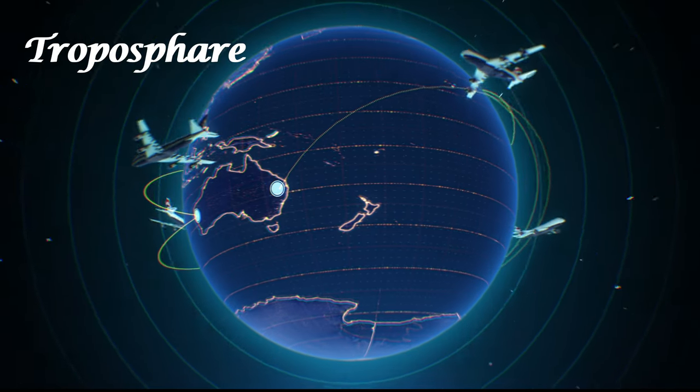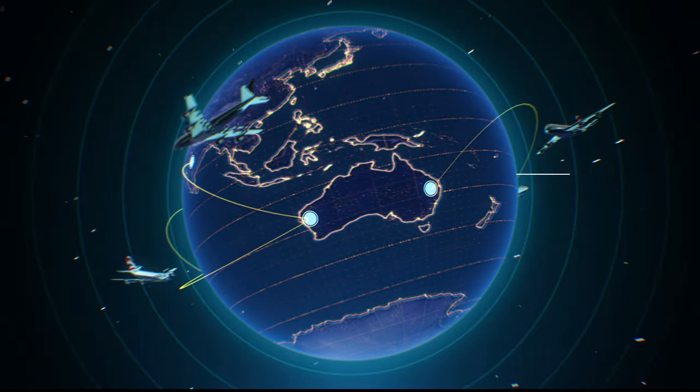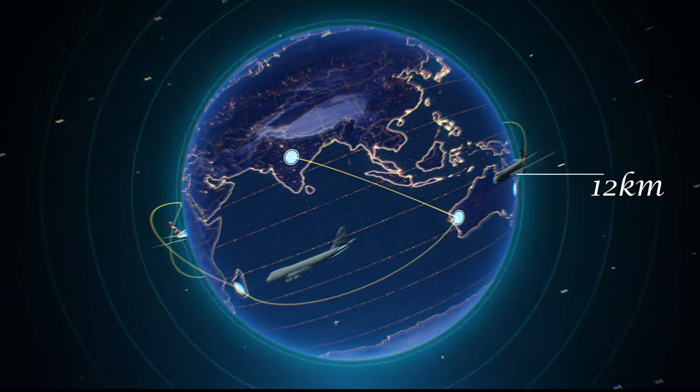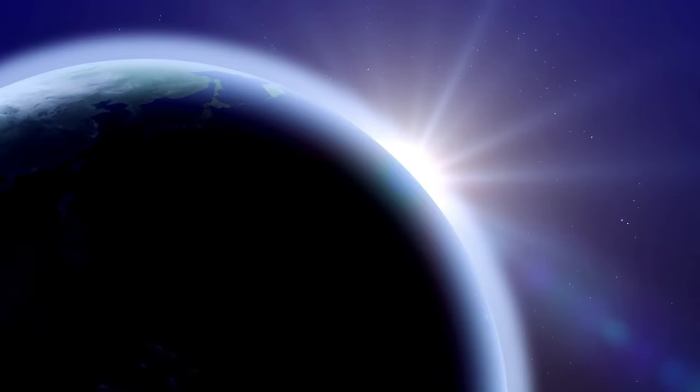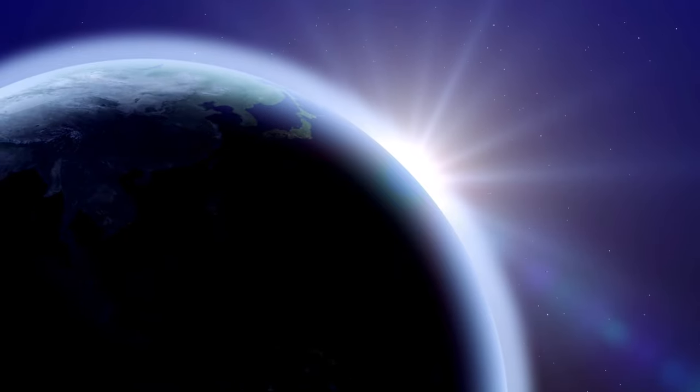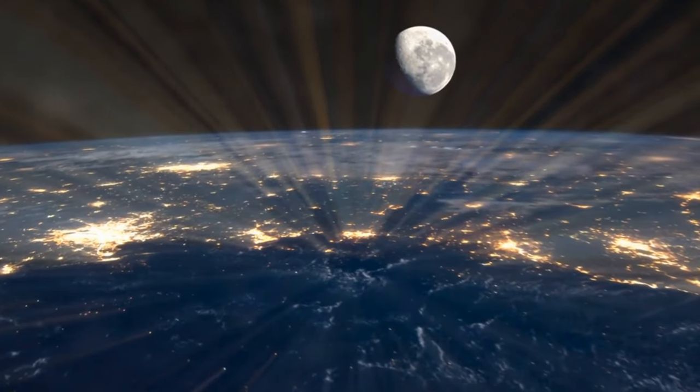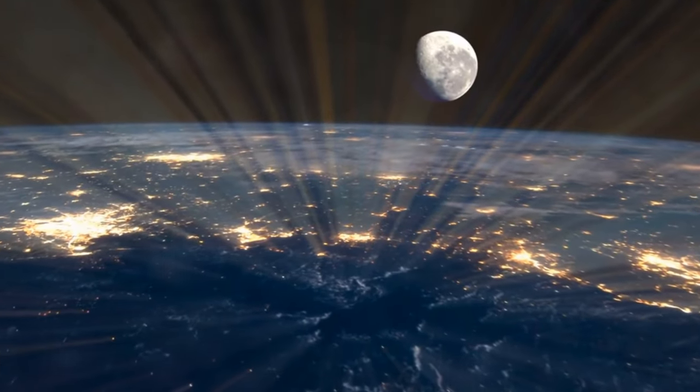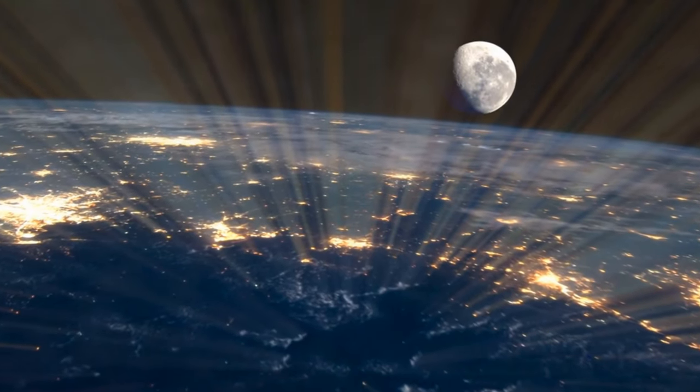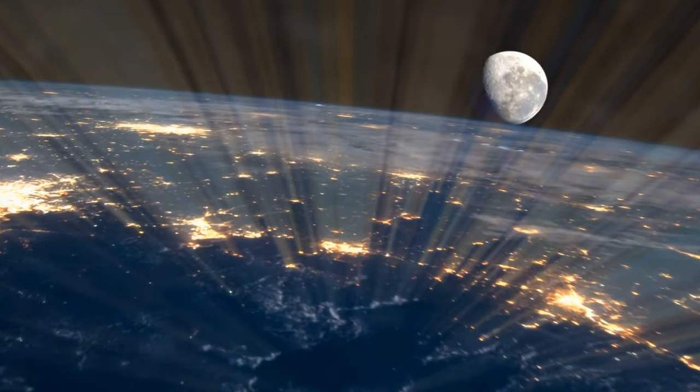Troposphere: Earth's troposphere extends from Earth's surface to, on average, about 12 kilometers in height, contains about 99% of all water vapor and aerosols, minute solid or liquid particles suspended in the atmosphere. In the troposphere, temperatures typically go down the higher you go, since most of the heat found in the troposphere is generated by the transfer of energy from Earth's surface.